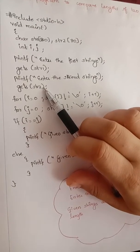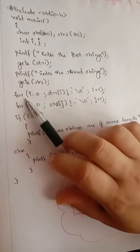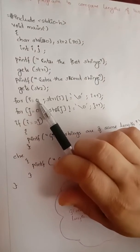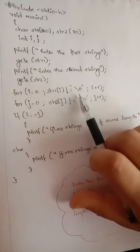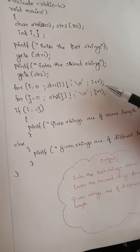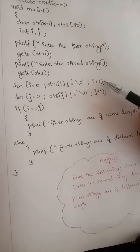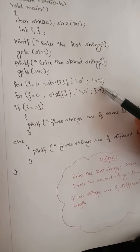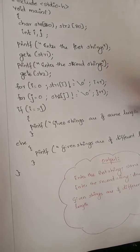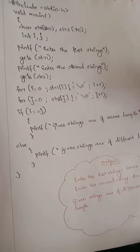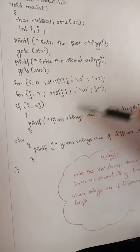Now your question is to compare the length — the first string length and the second string length. So you are using a for loop: for i equal to 0, str1[i] not equal to null character, i++. Normally we have a body for a for loop, but here we don't have a body. Instead, we are putting a semicolon at the end of the for loop, so the loop can continue without executing a body. Both the i loop and j loop work this way.